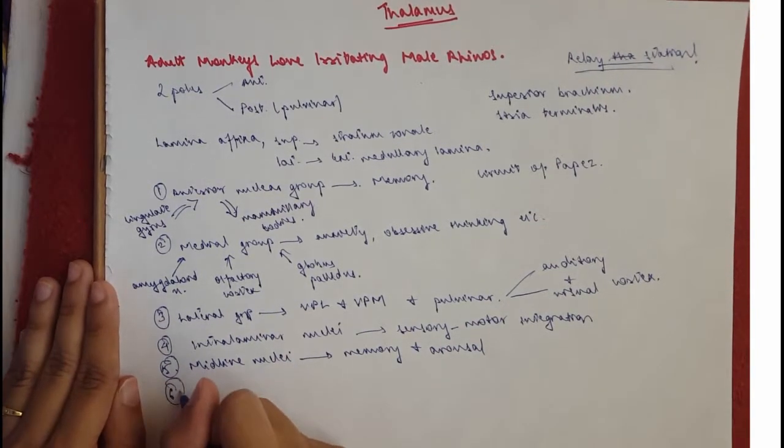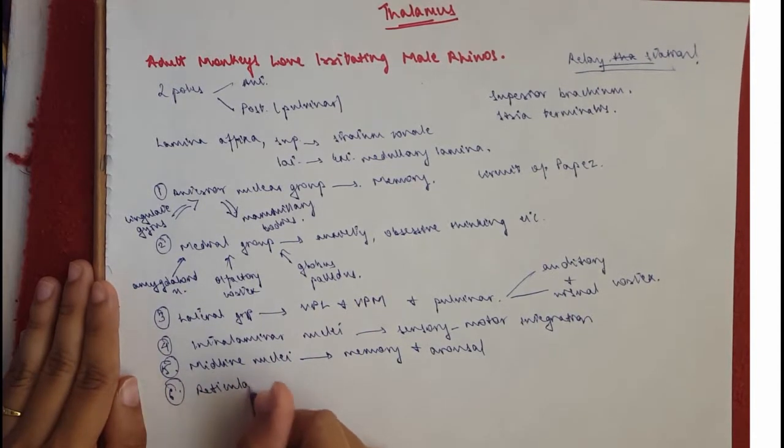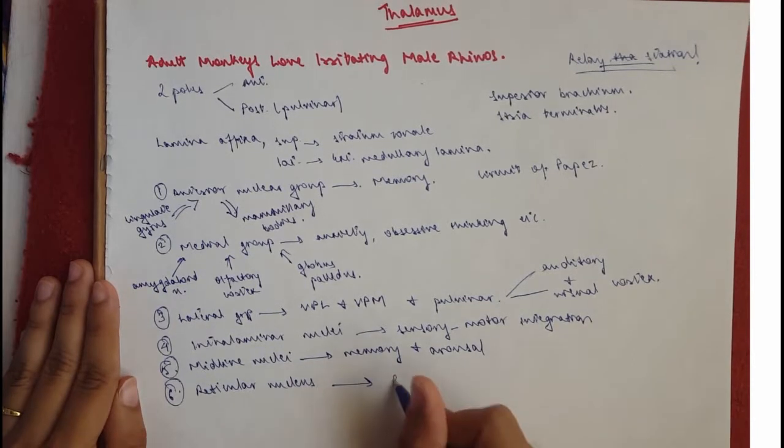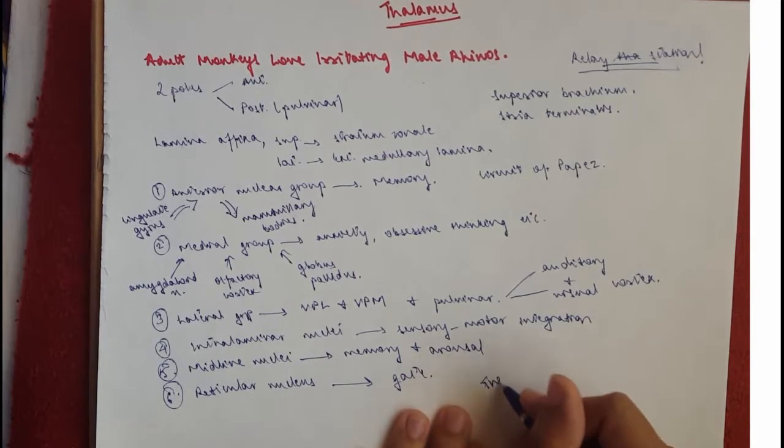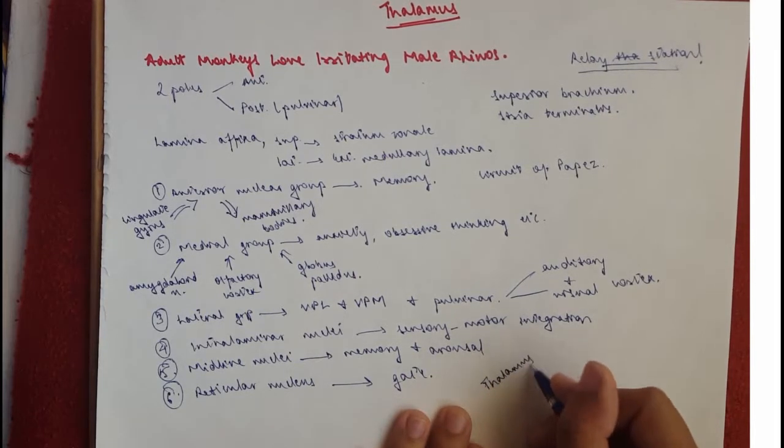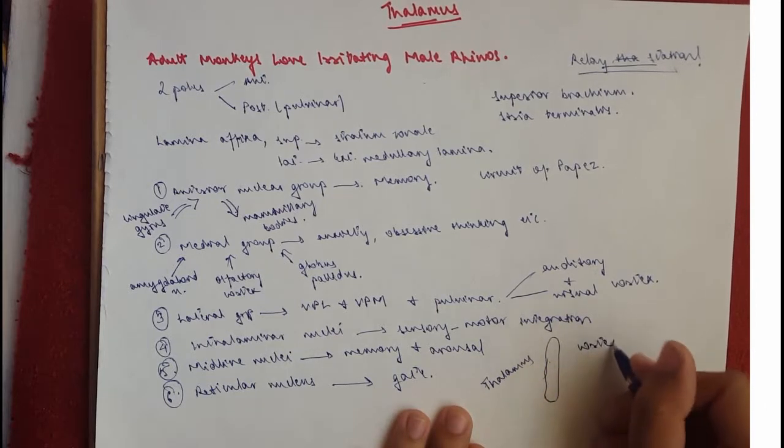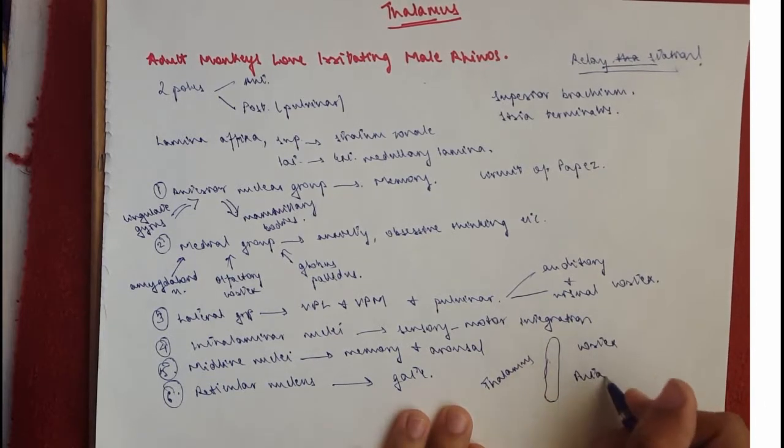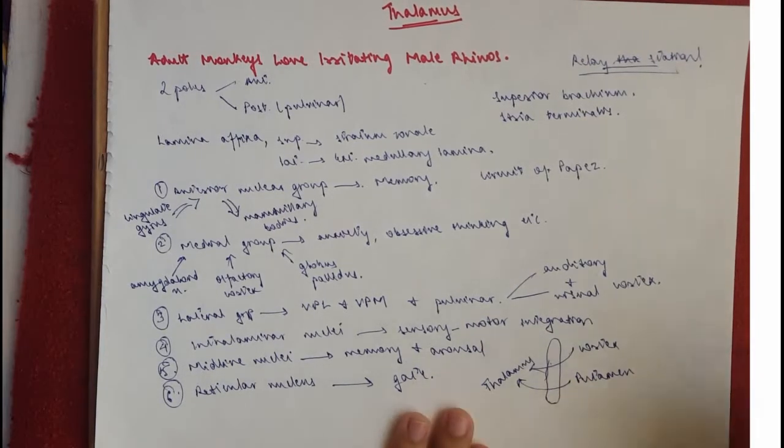Then we move on to the rhinos which is the reticular nucleus and this acts like a gate. So the reticular nucleus acts like a gate, it's a gating system. So if this is the thalamus and this is the reticular nucleus and this would be the cortex and the putamen, it acts as a gate so they pass through this and project onto here or vice versa.